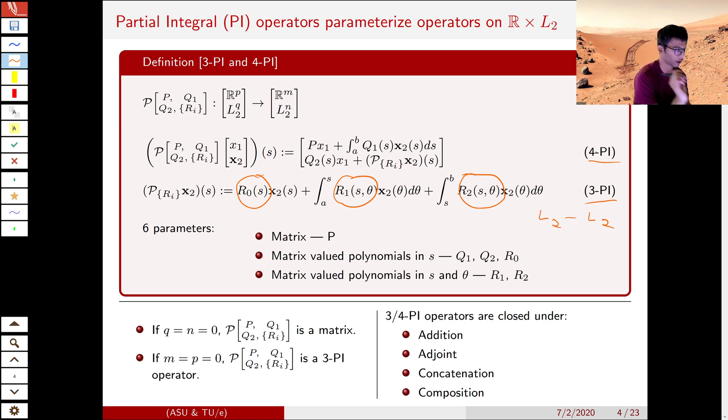4-PI operators on the other end have four maps. P, which is a matrix from R to R. Q, that is, Q1, which is an integral operator from L2 to R. And Q2 is a polynomial from R to L2. And L2 to L2 is a 3-PI operator itself and has three components in them. So 4-PI operators have four maps but six parameters.